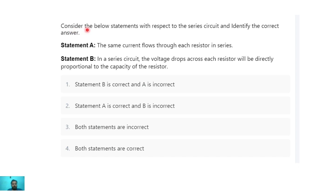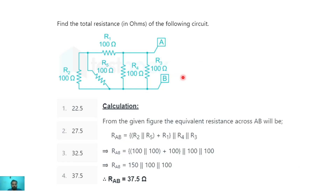Next question: consider the below statements with respect to a series circuit and identify the correct answer. Statement A says the same current flows through each resistor in series. Both statement A and statement B are correct — in a series circuit the same current flows through each resistor, and the voltage drop across each resistor is directly proportional to its resistance. So both statements are correct.